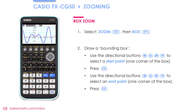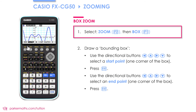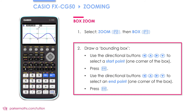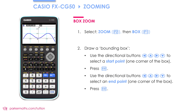The final method I'm going to show you for zooming — and my personal favorite — is to use the box zoom. Press F2 and then F1 for box. Box zoom allows us to draw a box around the region we want to zoom into. We first move our crosshair to one corner of the box and press EXE, then move to a second position for the other corner. The pink box shown is what will be displayed on screen when I press EXE. By using a combination of these zoom methods along with the view window, you have lots of control over precisely which part of the graph you'd like to see.